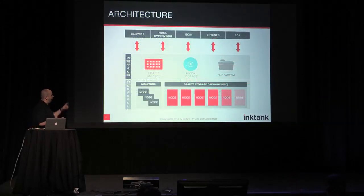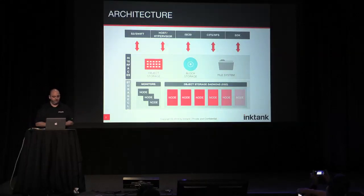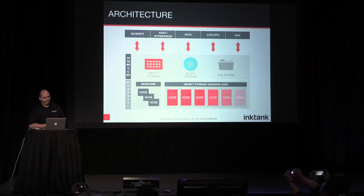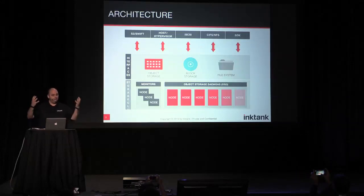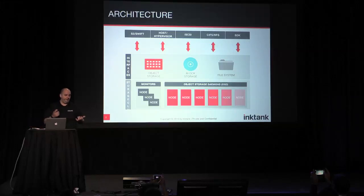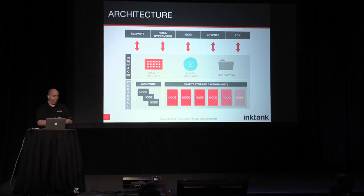The Ceph architecture is broken up into three different layers. At the bottom is the storage layer — what we call RADOS, which is the Ceph object store — and it's made up of monitor nodes and object storage daemons. Above that are the interfaces: an object, block, and file system interface that allow you to take what's in that object store and expose it to a variety of applications like S3 or Swift APIs, hosts and hypervisors needing storage for virtual disks, iSCSI targets, CIFS and NFS clients, and an SDK to talk directly to the storage cluster.